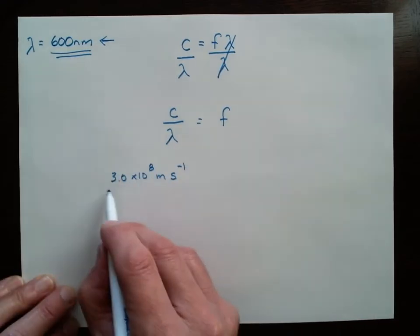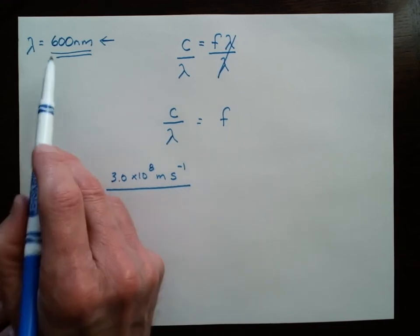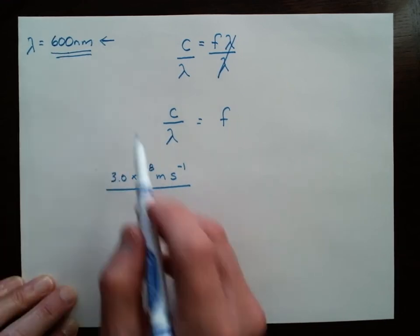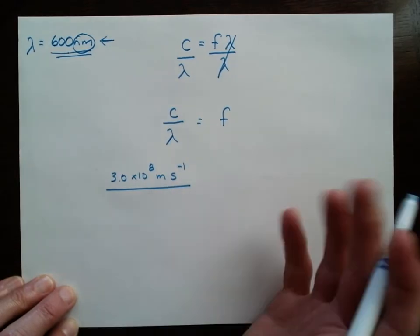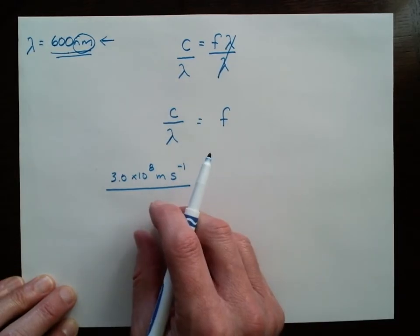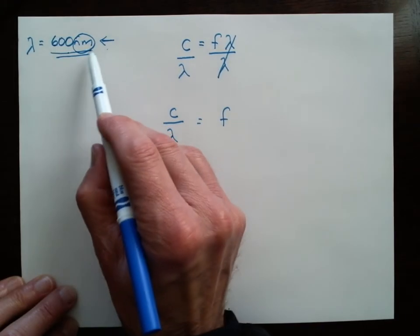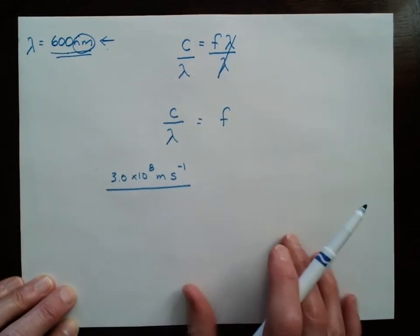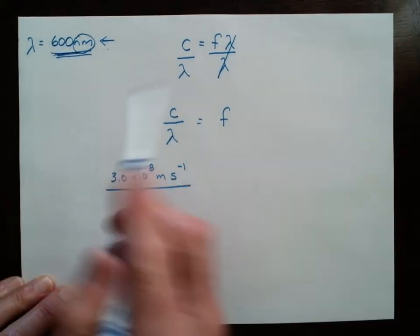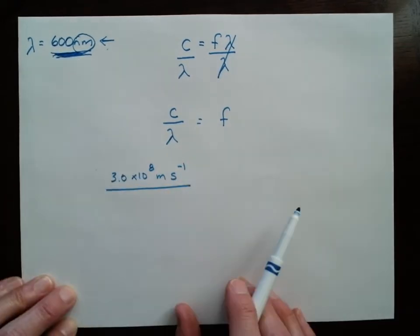And then I know my wavelength, that's 600 nanometers. But I can't just pop this in here, because nanometer doesn't talk to meter. So there's a conversion that I have to do. I'm going to need to convert this nanometer into a meter. I'm just going to choose to do it this way. I'm just going to make this nanometer a meter.